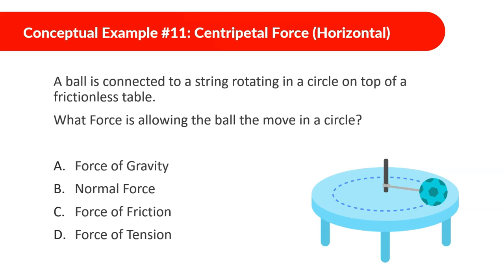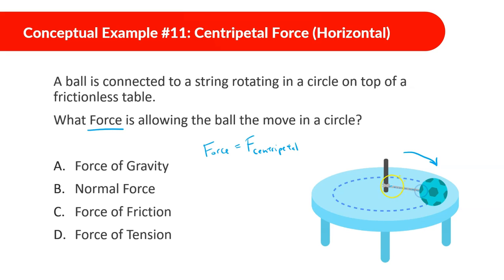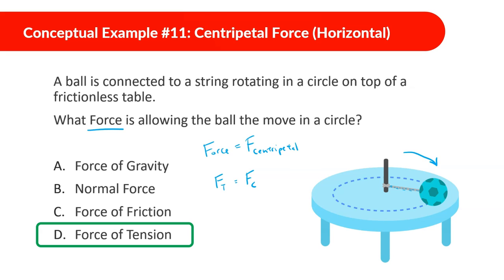A ball is connected to a string rotating in a circle on top of a frictionless table. What force is allowing the ball to move in a circle? This is crucial in these kinds of problems — identifying what force is acting as the centripetal force. Without the string, if the string were cut, the ball would just fly off. So the force of tension is what allows it to go in a circle, meaning the force of tension equals the centripetal force.